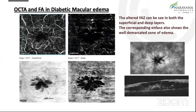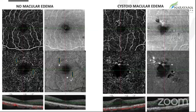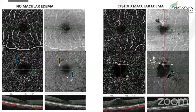Coming to the en-face image, that also shows us a lot of detail and is very well comparable to dye-based angiography, where we see the pattern in cystoid macular edema so beautifully. It can be seen in both the superficial and the deep layers, and the corresponding en-face also shows the edema. Comparing no macular edema with cystoid macular edema, we are able to see the manifestation across the different layers and in the en-face as well, as against a normal-looking FAZ with no edema.